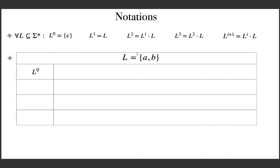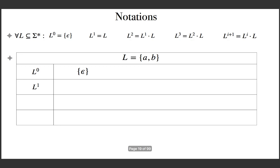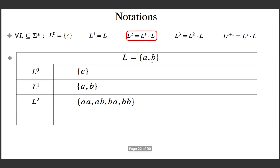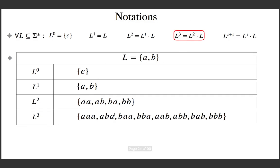Let us see an example. Let L be this language. L raised to 0, regardless of L, is {epsilon}. L raised to 1 is the language itself. L raised to 2 is L raised to 1 concatenated with L — the concatenation of L with itself. L raised to 3 is L raised to 2 concatenated with L raised to 1 by definition, giving the corresponding language. Concatenating with A gives the first four strings, and concatenating with B gives the next four strings.